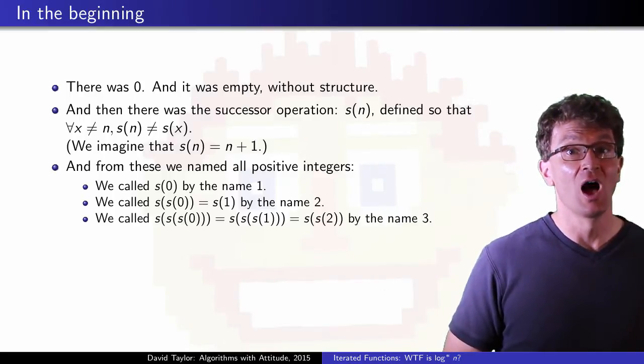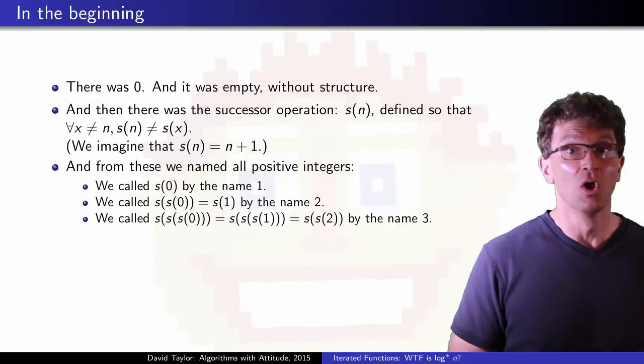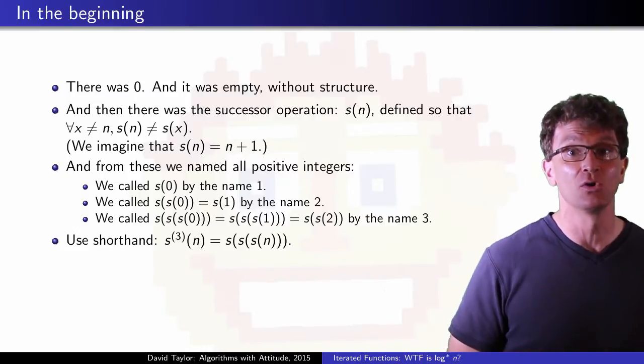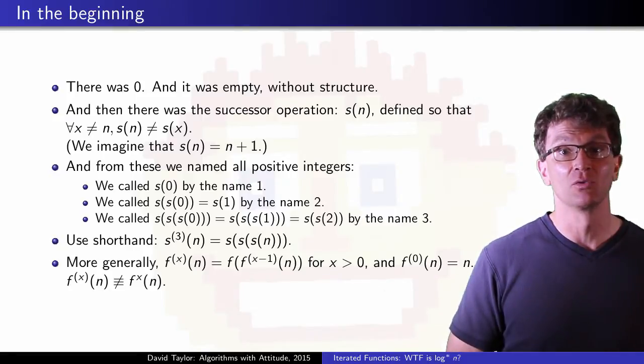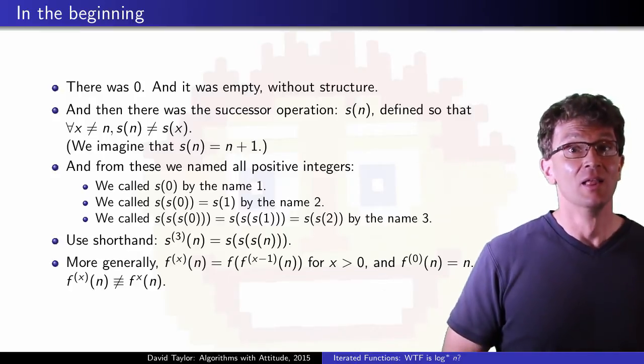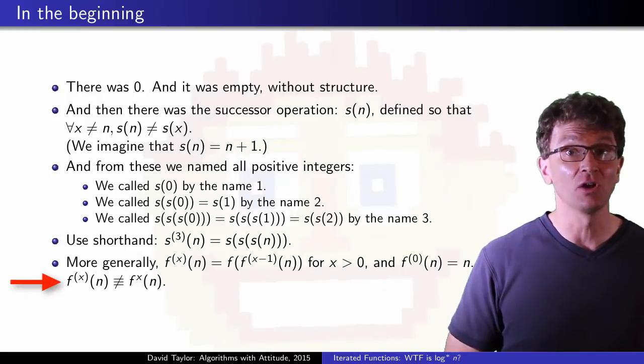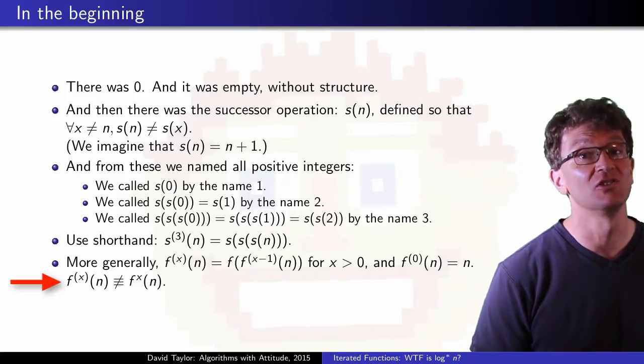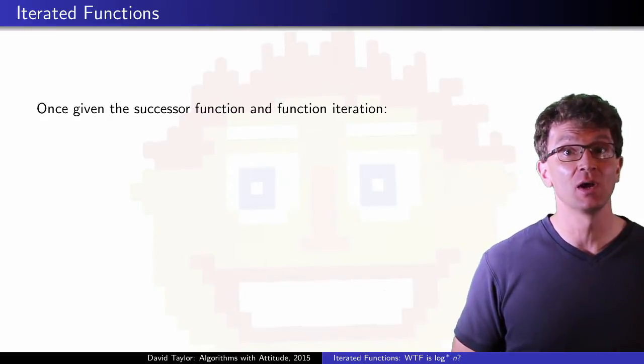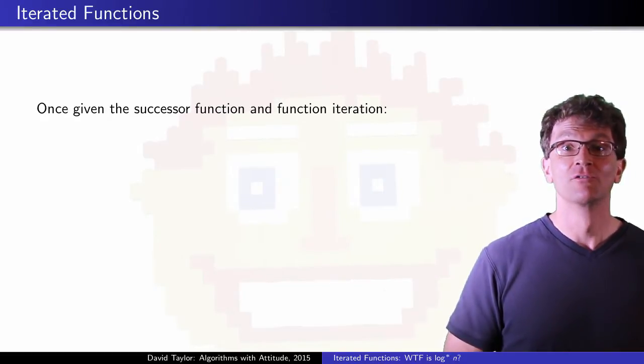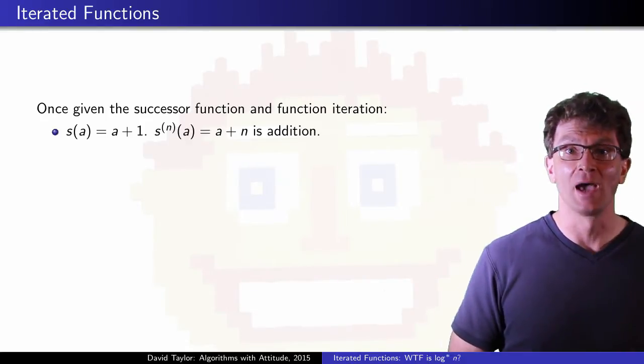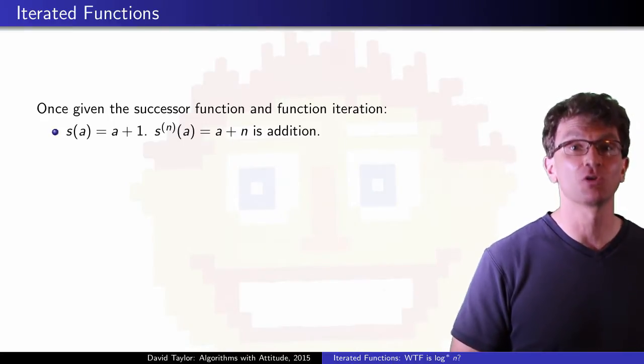For iterated functions on 0, like s, we use integers as shorthand, and we also use integers as shorthand within the iterated function notation. We define function iteration in general, where you kind of nest the result from one iteration into the next. This is not taking the result of the function to a power, even though the notation is similar. So once we have that successor function and function iteration, we can use them to define other functions. For example, if you iterate the successor or increment function n times, you have added n. Addition comes from the iteration of the increment function.